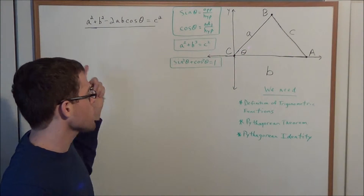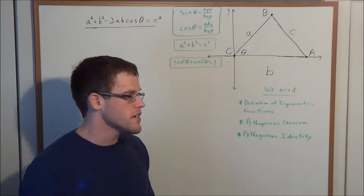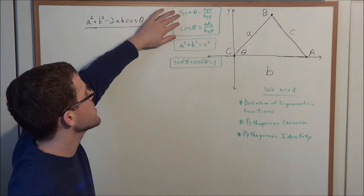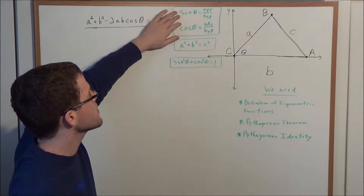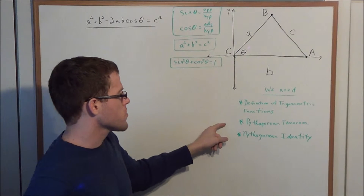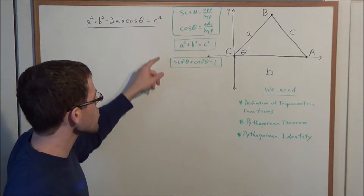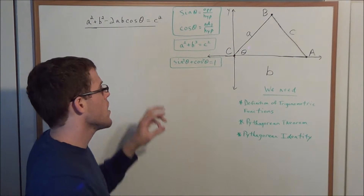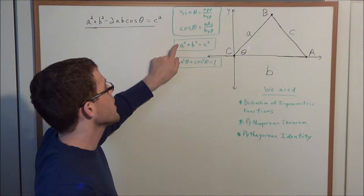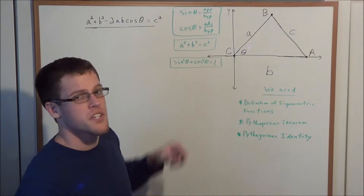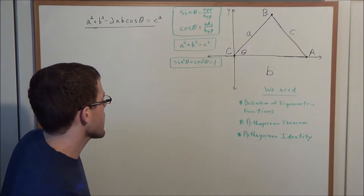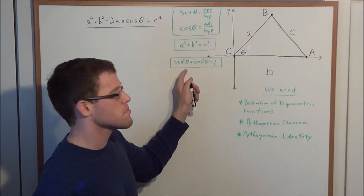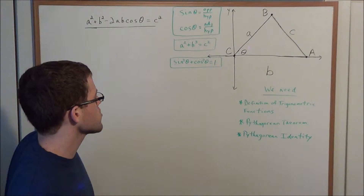Before we get started, let's take a look at what we're going to need. We need the definition of trigonometric functions — in particular, we need sine theta and cosine theta. We're also going to need the Pythagorean theorem: a squared plus b squared equals c squared, when we have two legs of a right triangle a and b, and the hypotenuse c. We also need the Pythagorean identity: sine squared theta plus cosine squared theta equals one.